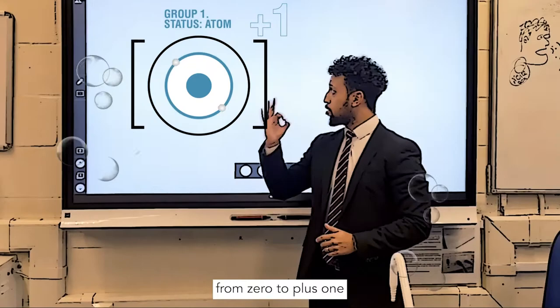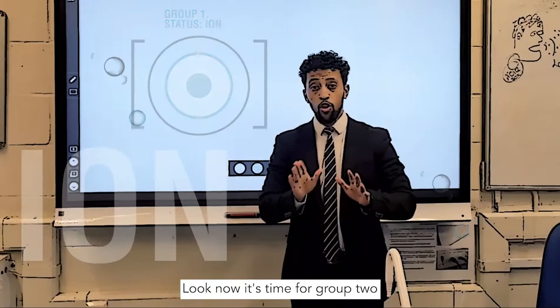All it's got to do is just lose one electron. Now its charge will change from zero to plus one. It's no longer an atom, you call it a cation.